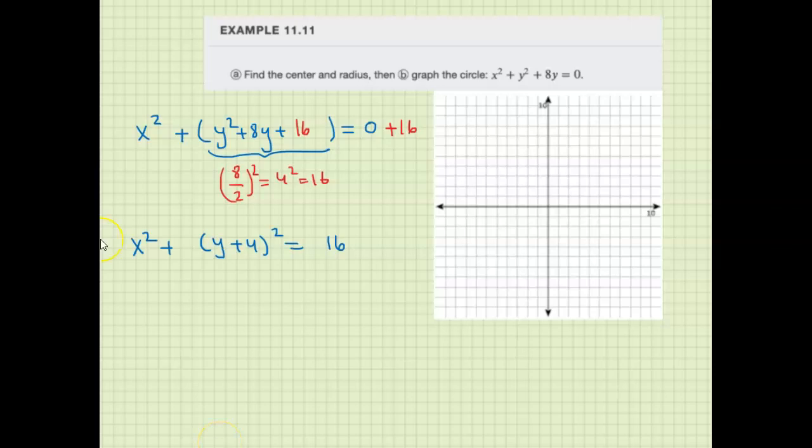So this is in standard form now. The h is equal to 0, because there's nothing in parentheses with the x. The k equals negative 4, and the r equals 4.